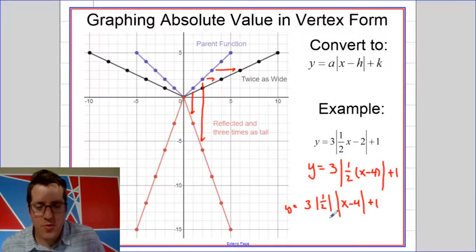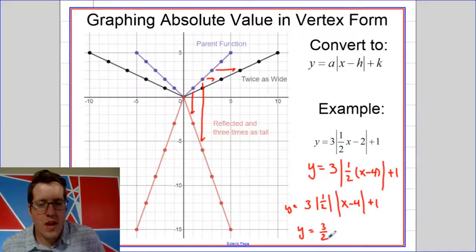So there are two absolute values in here. The absolute value of one half is just one half. So that would end up being three halves times the absolute value of x minus four plus one.